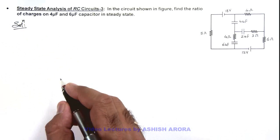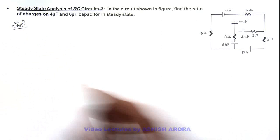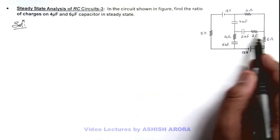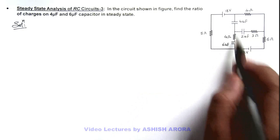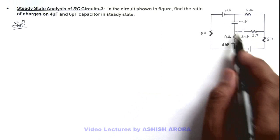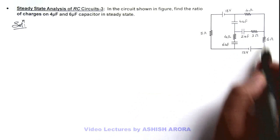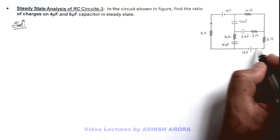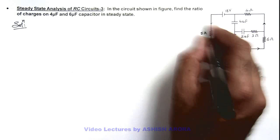So here we just have a look if there is any closed loop where current can flow. So here you can see in these 3 branches as capacitors are connected no current will flow through these. So only in the outer loop current will circulate and the value of this current can be easily calculated.